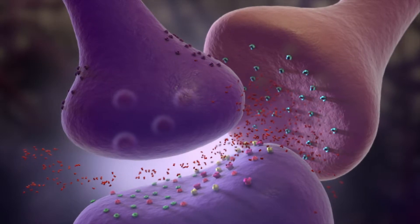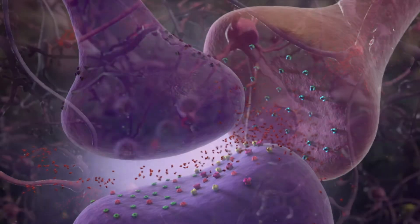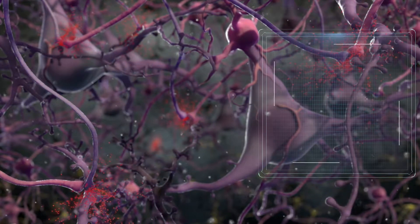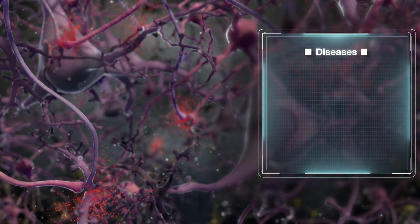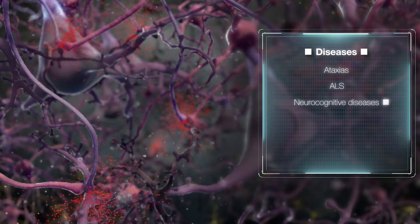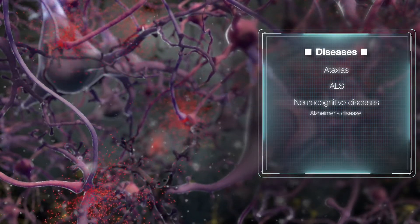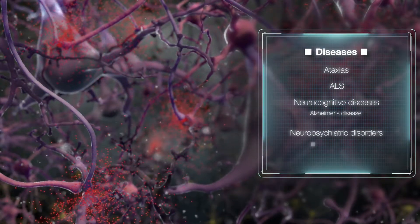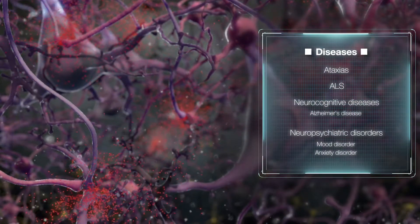Too much glutamate receptor excitation can have neurotoxic effects and is implicated in various diseases, including ataxias, ALS, neurocognitive diseases including Alzheimer's disease, and neuropsychiatric disorders including mood and anxiety disorders.